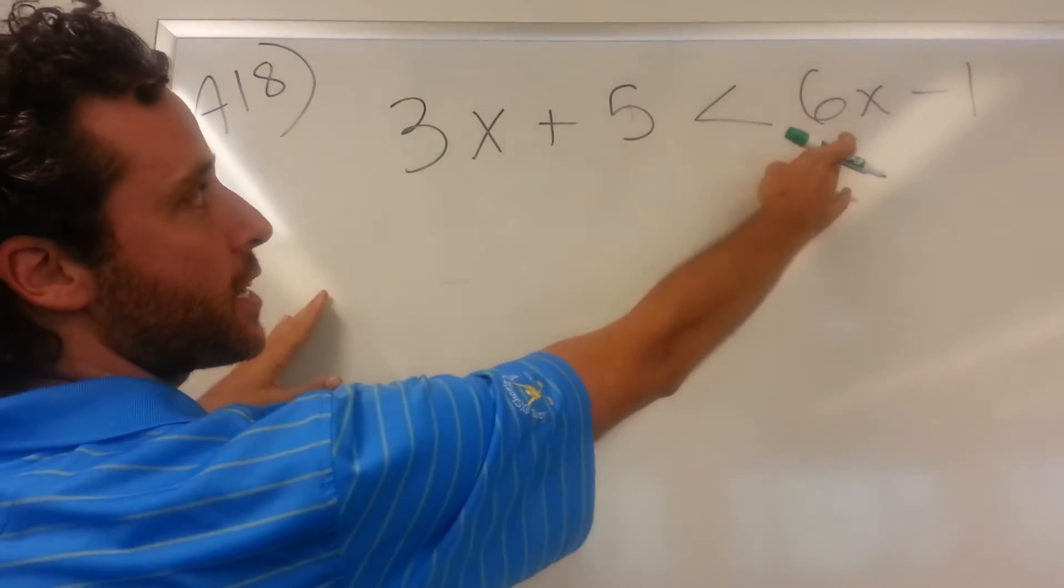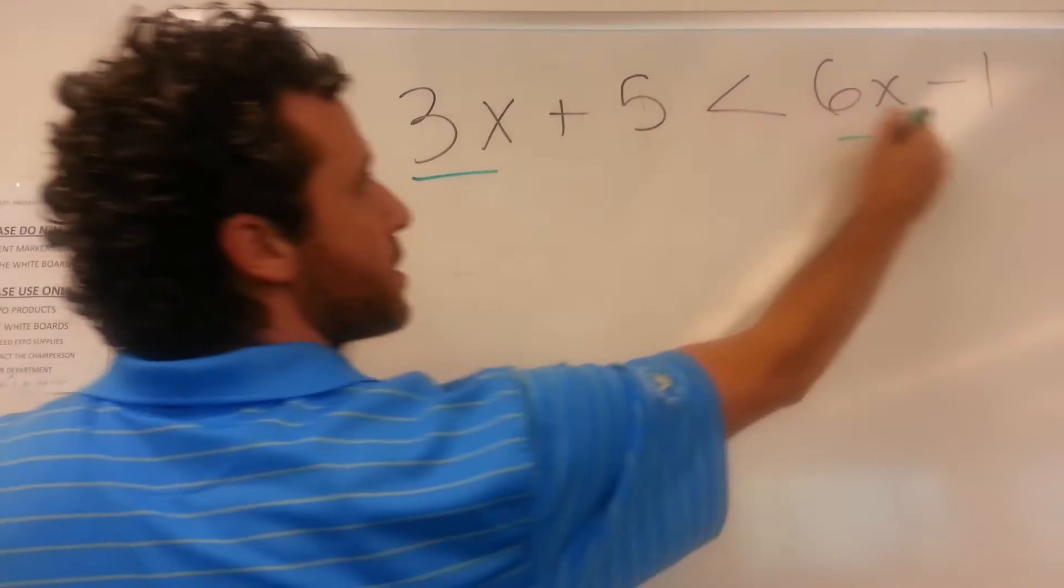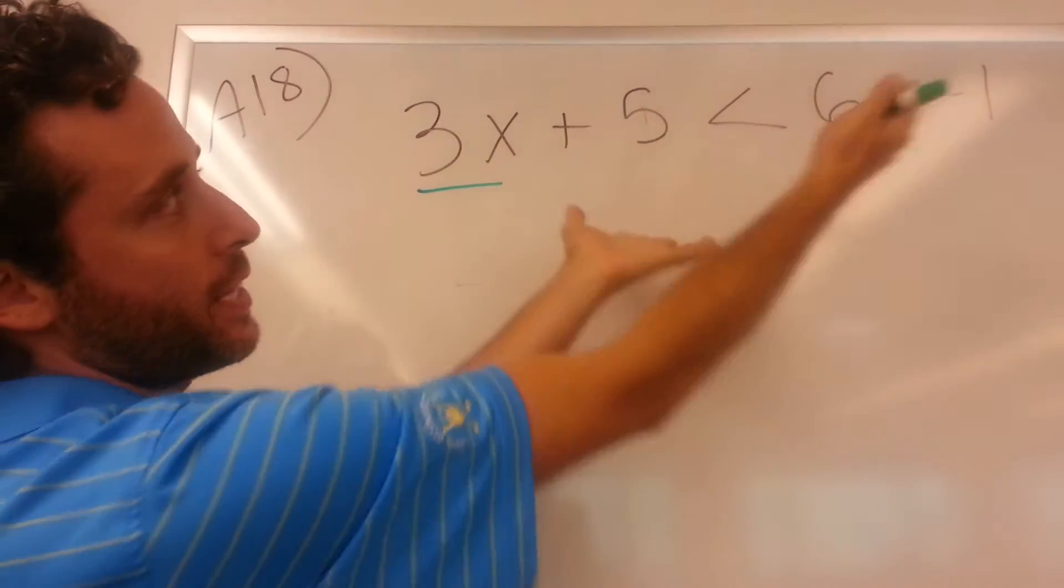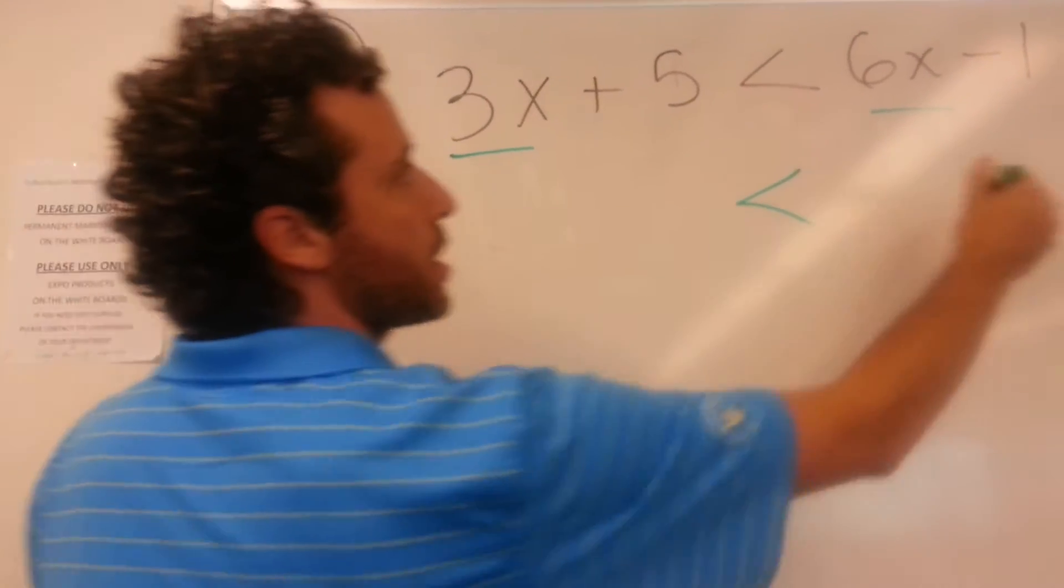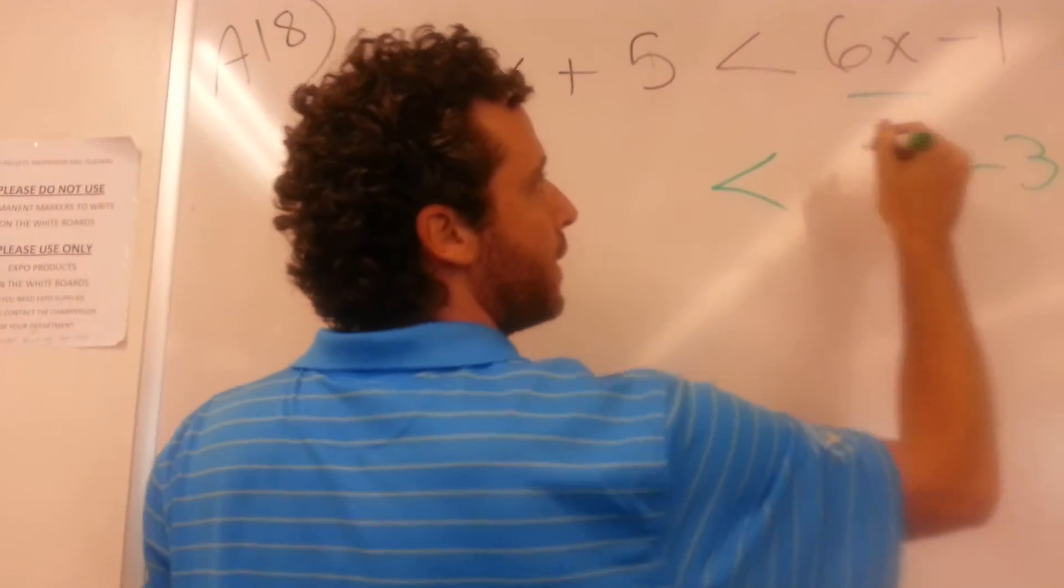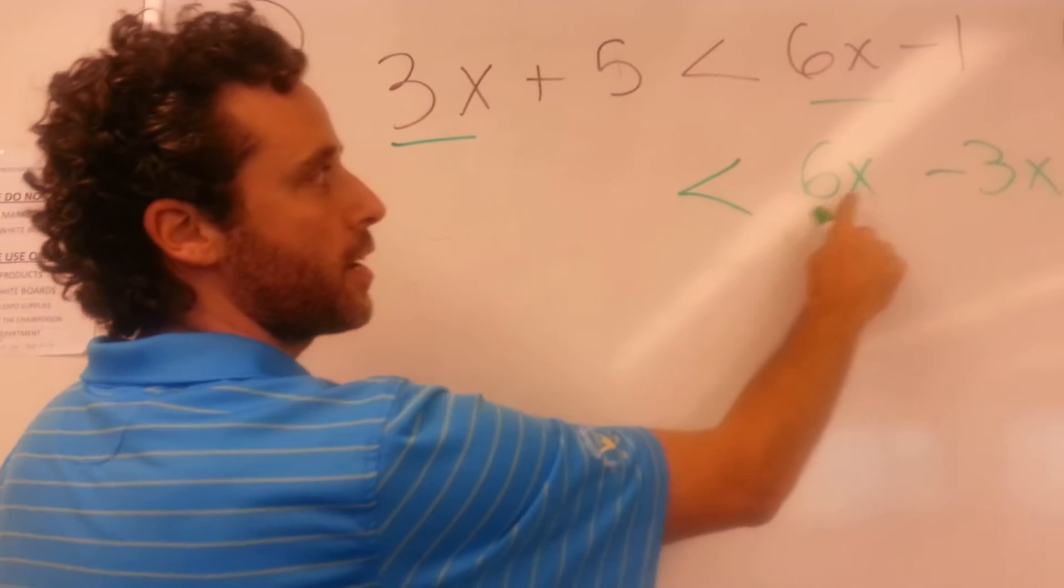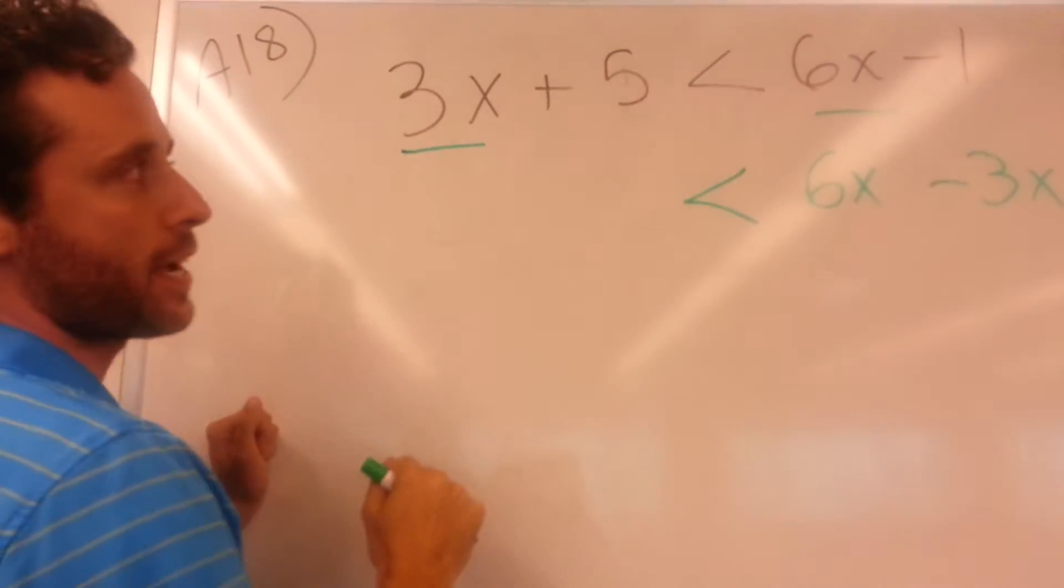Now this side has six x's, this side has three x's. Might as well bring the three x over to that side because there's more x's there anyway. So this positive three x is going to be a negative three x on the other side, and then the six x, since that's staying on the same side of the inequality, it's going to remain a six x.